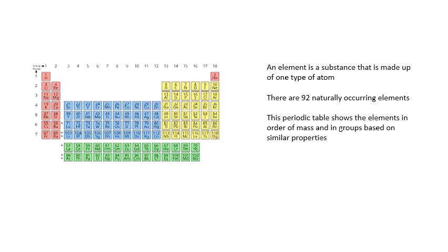An element is a substance that is made of one type of atom. There are 92 types of atom naturally occurring, so there are 92 elements. You can see them all in the periodic table, which puts the elements in order of mass, starting with the lightest.